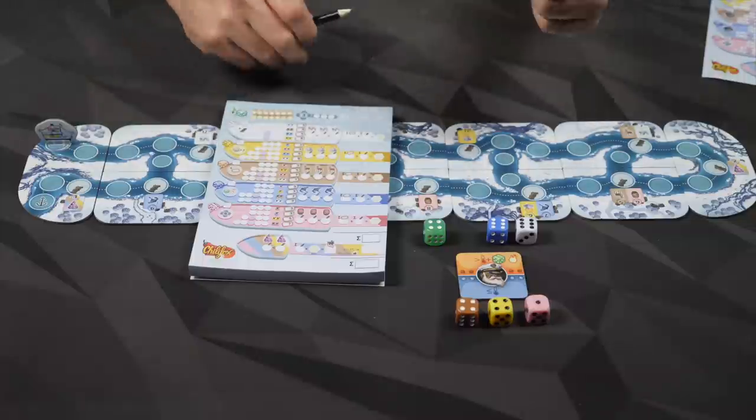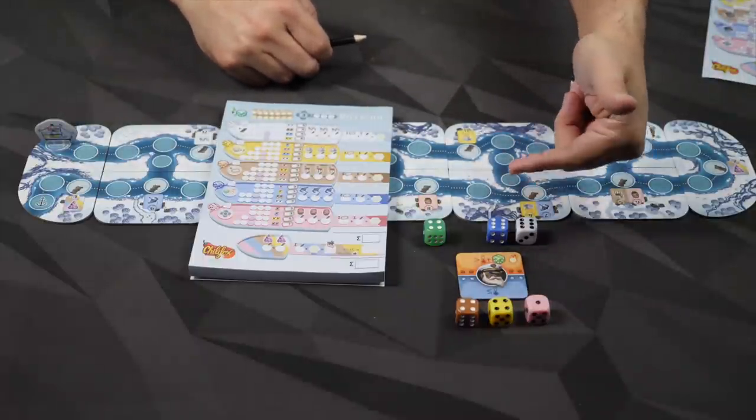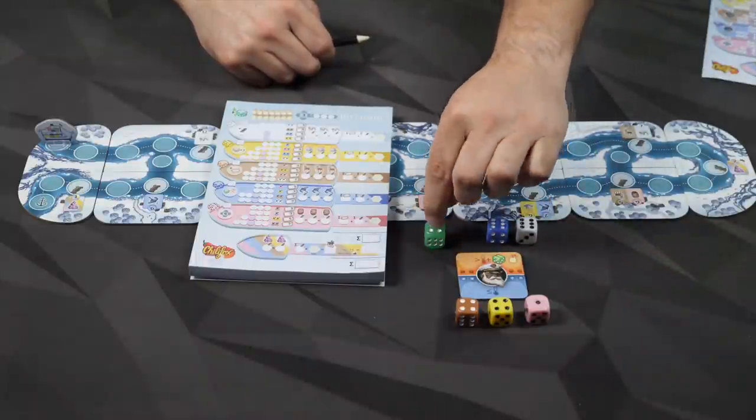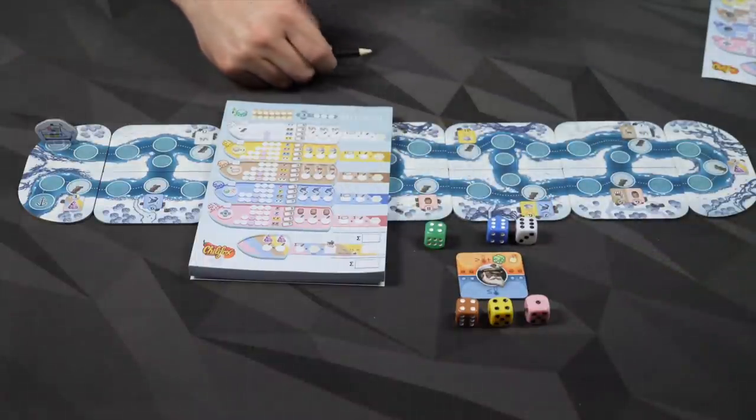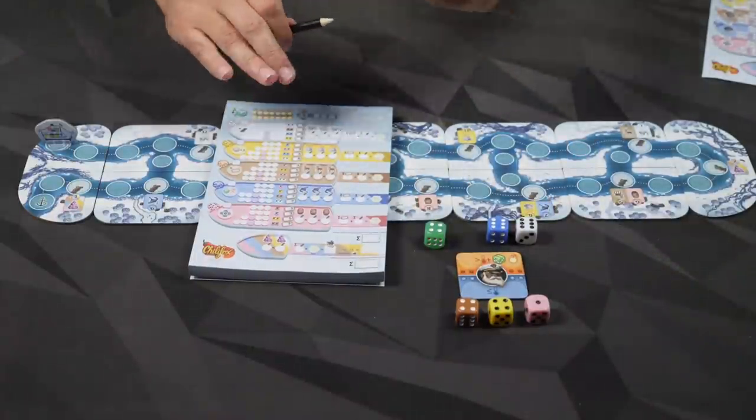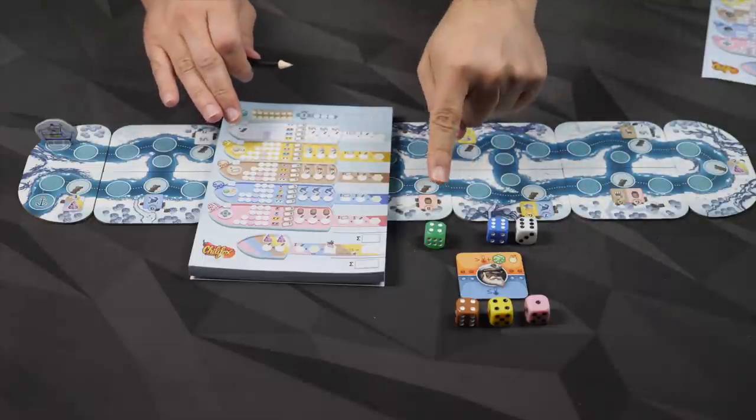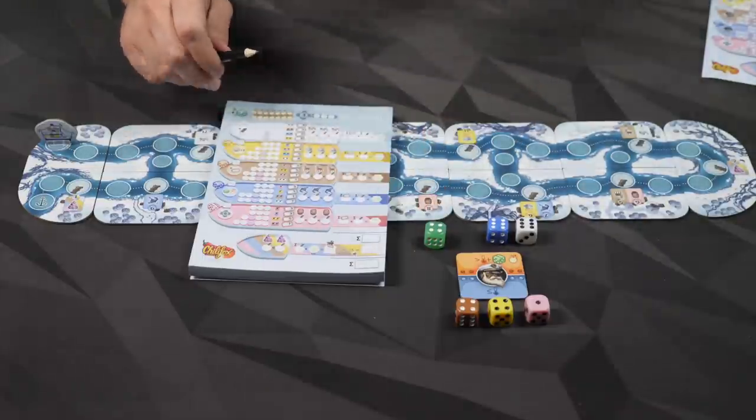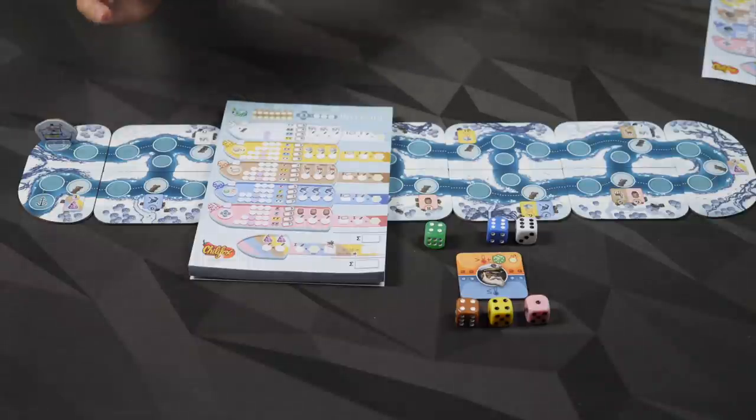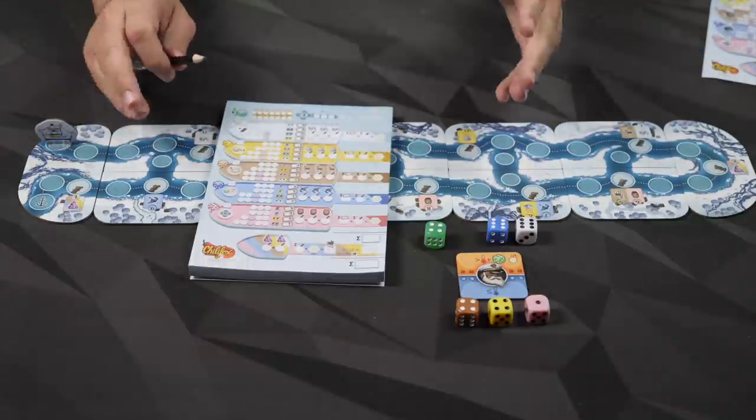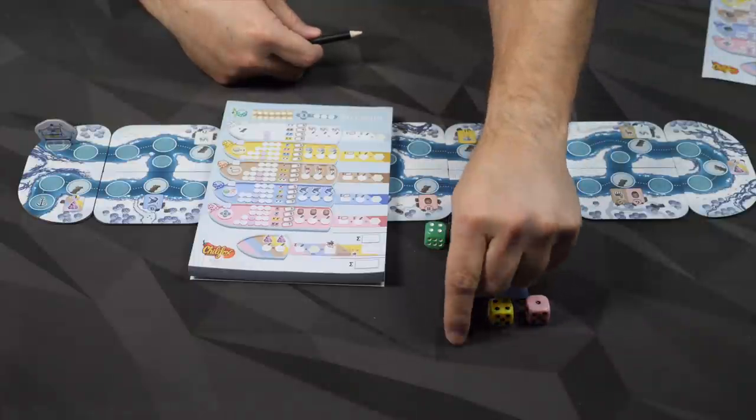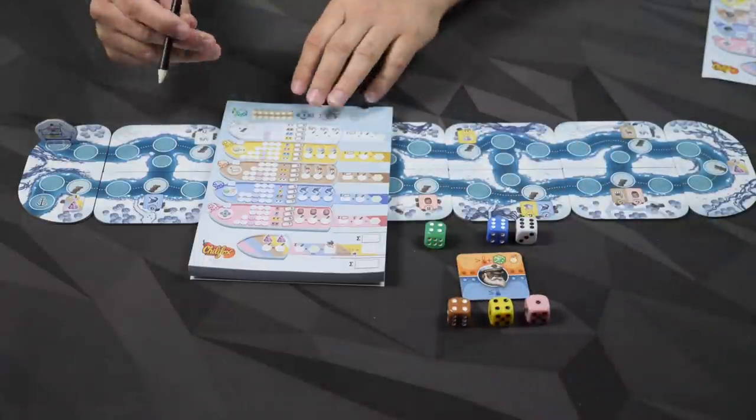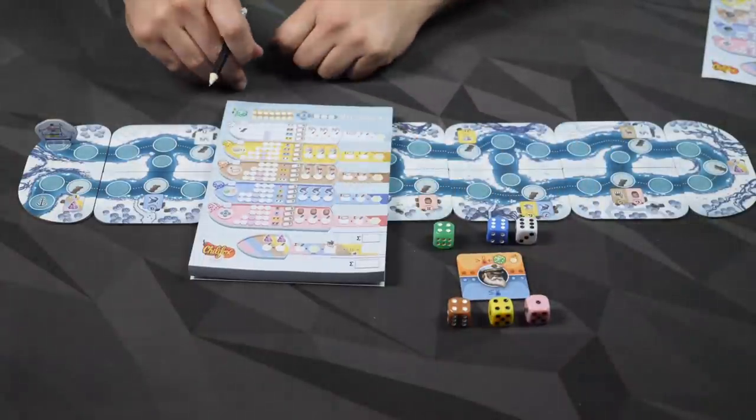And I can always, no matter which of those two choices I make, I'm allowed to also use this Aurora Borealis die and add that many pips, that many passengers to what I'm loading. But if I take this one, I'm also taking heat for those. So, for example, I'm going to go ahead and pick this die right here, the brown one, and I'm also going to add this green one.